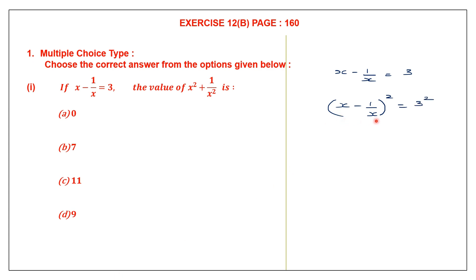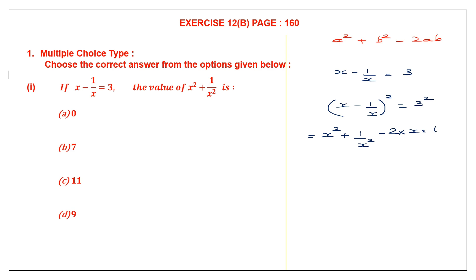This has become a minus b the whole square. We can use the formula: a minus b the whole square equals a squared plus b squared minus 2ab. Here a is x and b is 1 by x. So substituting: x squared plus 1 by x squared minus 2 times x times 1 by x is equal to 3 squared, which is 9.